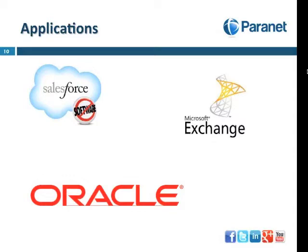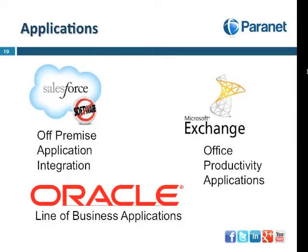The second step is looking at your business applications — whether you have line of business applications from Oracle or SAP handling core business systems like accounting, finance, sales, or customer relationship management. You may also have cloud or SaaS applications and need to look at how those integrate with your line of business applications. You also need to look at office productivity applications like Office 2012, email, Exchange, and Active Directory, and understand any software licensing risks or integration costs after an acquisition or merger.